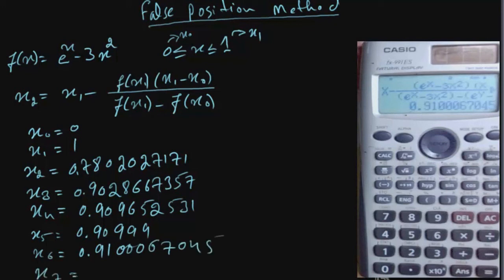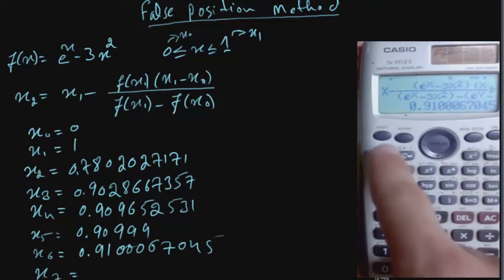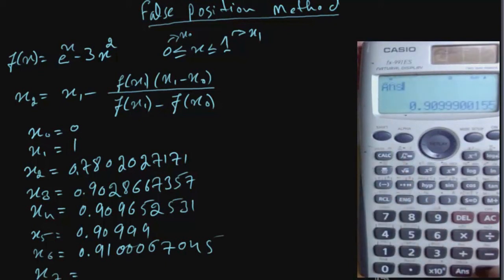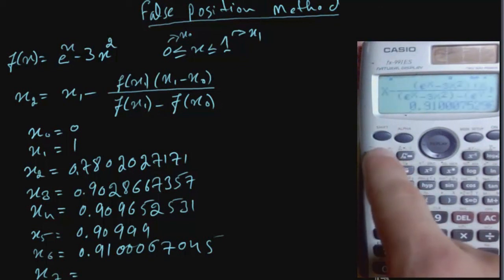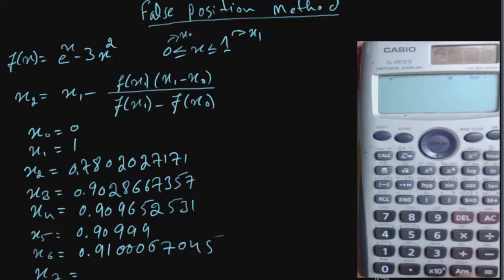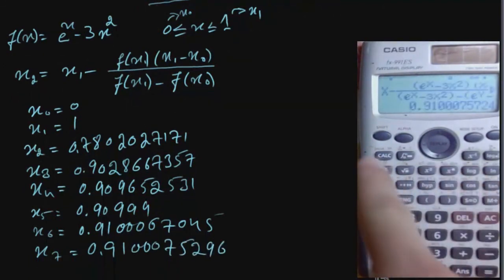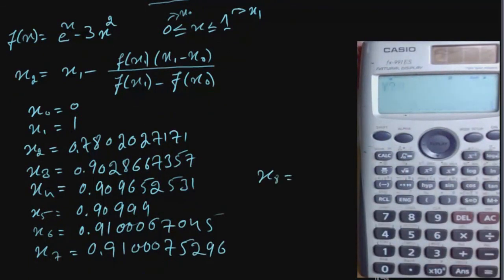Now, further, I'm not going to the actual function, but rather directly pressing calc, and then ans, to enter x6 in place of x. And y is 1, we get 0.9100007529 6. You can press again, calc, enter answer, and then two time equal. Repeat it now. Calc, ans, equal, equal, calc, ans, equal, equal.